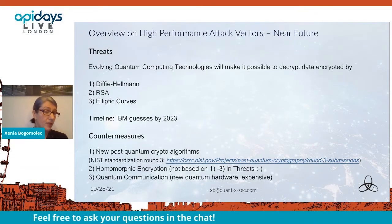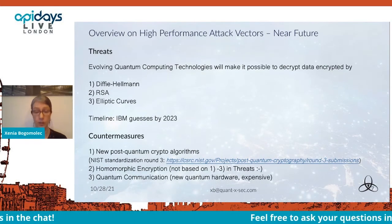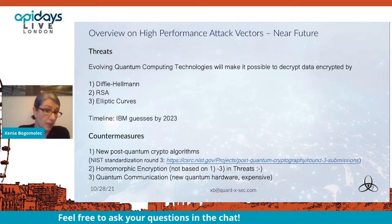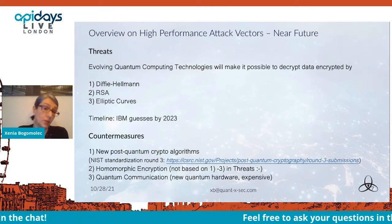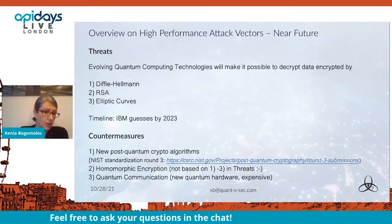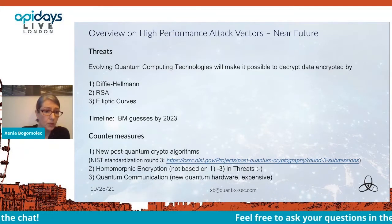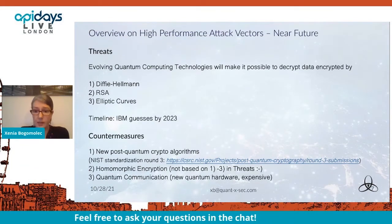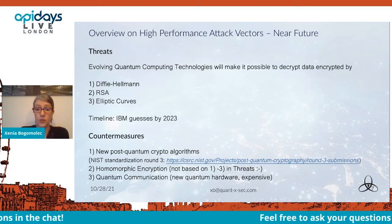Evolving quantum computing technologies will make it possible to decrypt data encrypted by Diffie-Hellman, RSA, and elliptic curves. The countermeasures are the new post-quantum crypto algorithms. I recommend looking at the NIST standardization round three, where they have the finalists covering all aspects like key exchange and digital signatures.